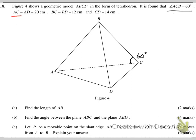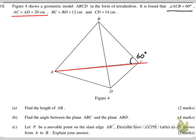We have AC is 20. You have to pay attention to this one. AC will be this red line. And the other one is AD.